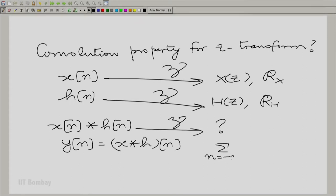Essentially, it would be summation m going from minus to plus infinity X(m) H(n - m) and this is Y of n. This needs to be Z transformed.